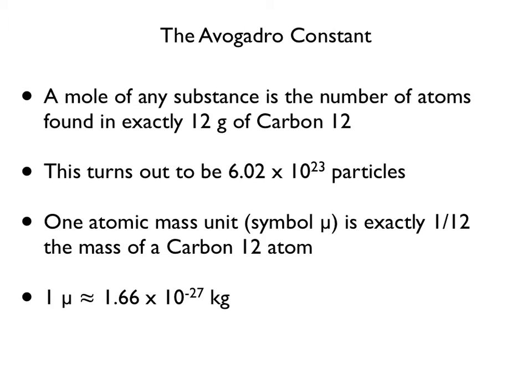Since atoms, molecules, and subatomic particles have tiny masses, it's convenient to have a small unit of mass. One atomic mass unit, symbol μ, is exactly 1/12 the mass of a carbon-12 atom. One atomic mass unit is about equal to 1.66 times 10 to the negative 27 kilograms.